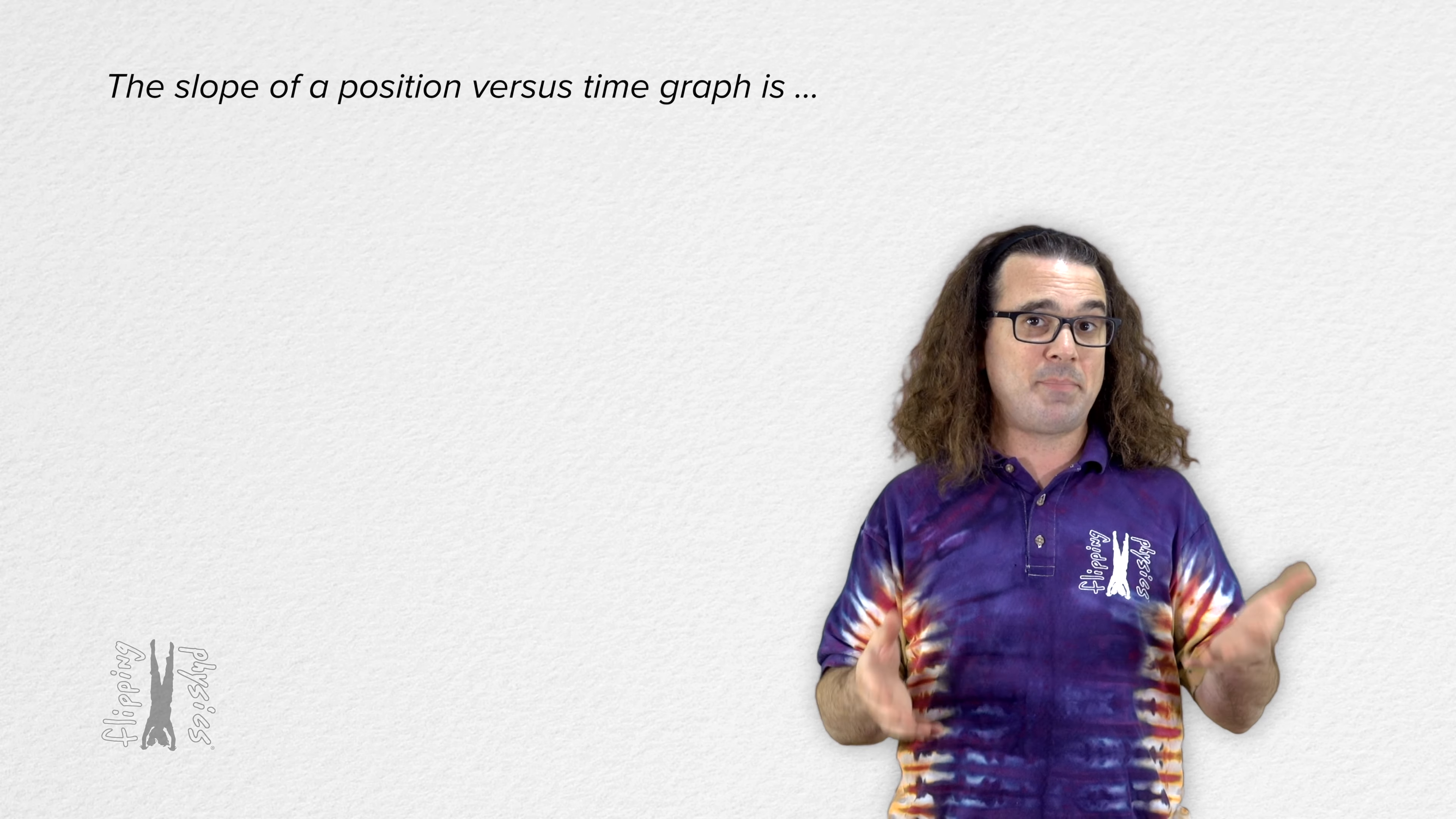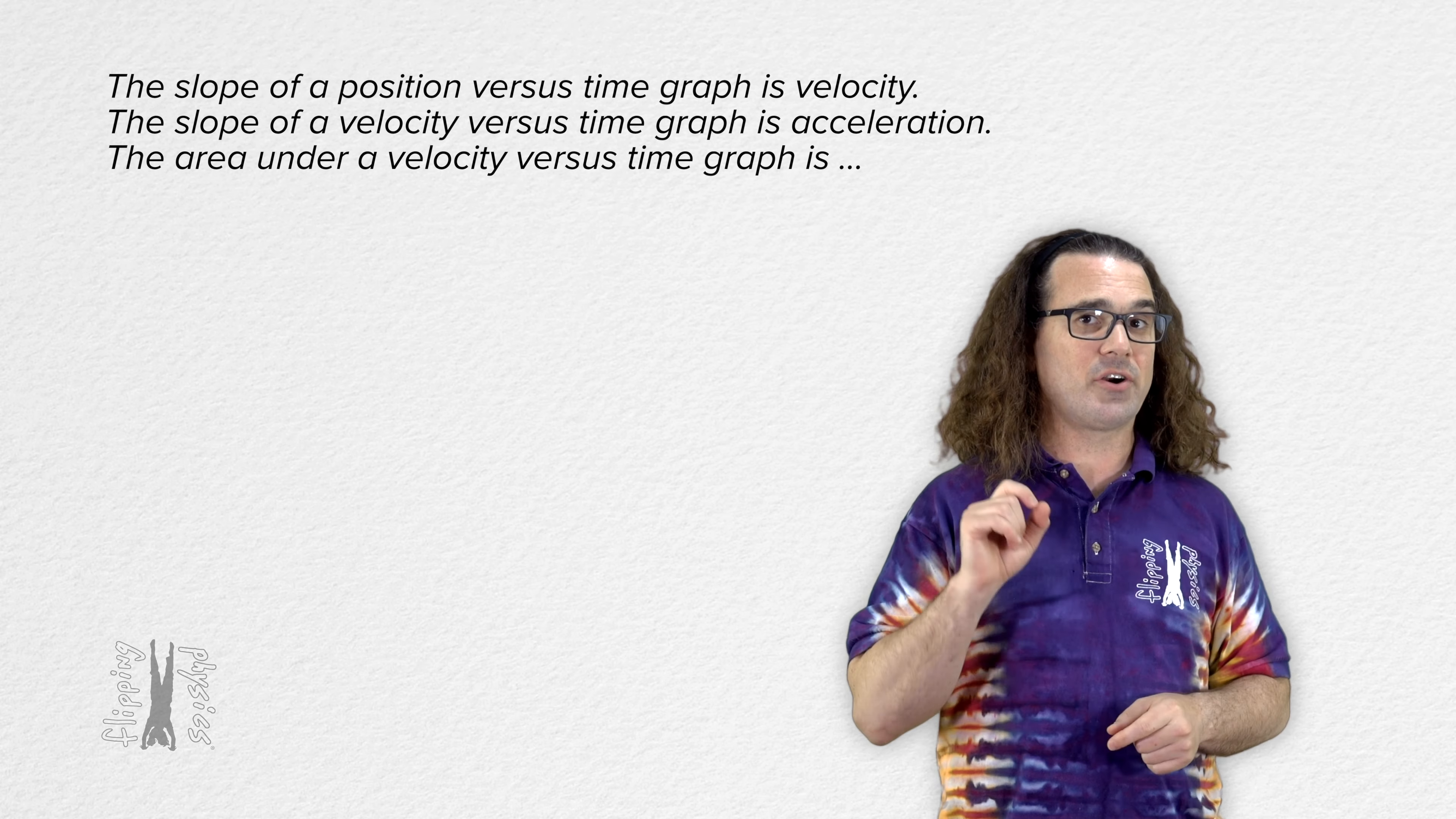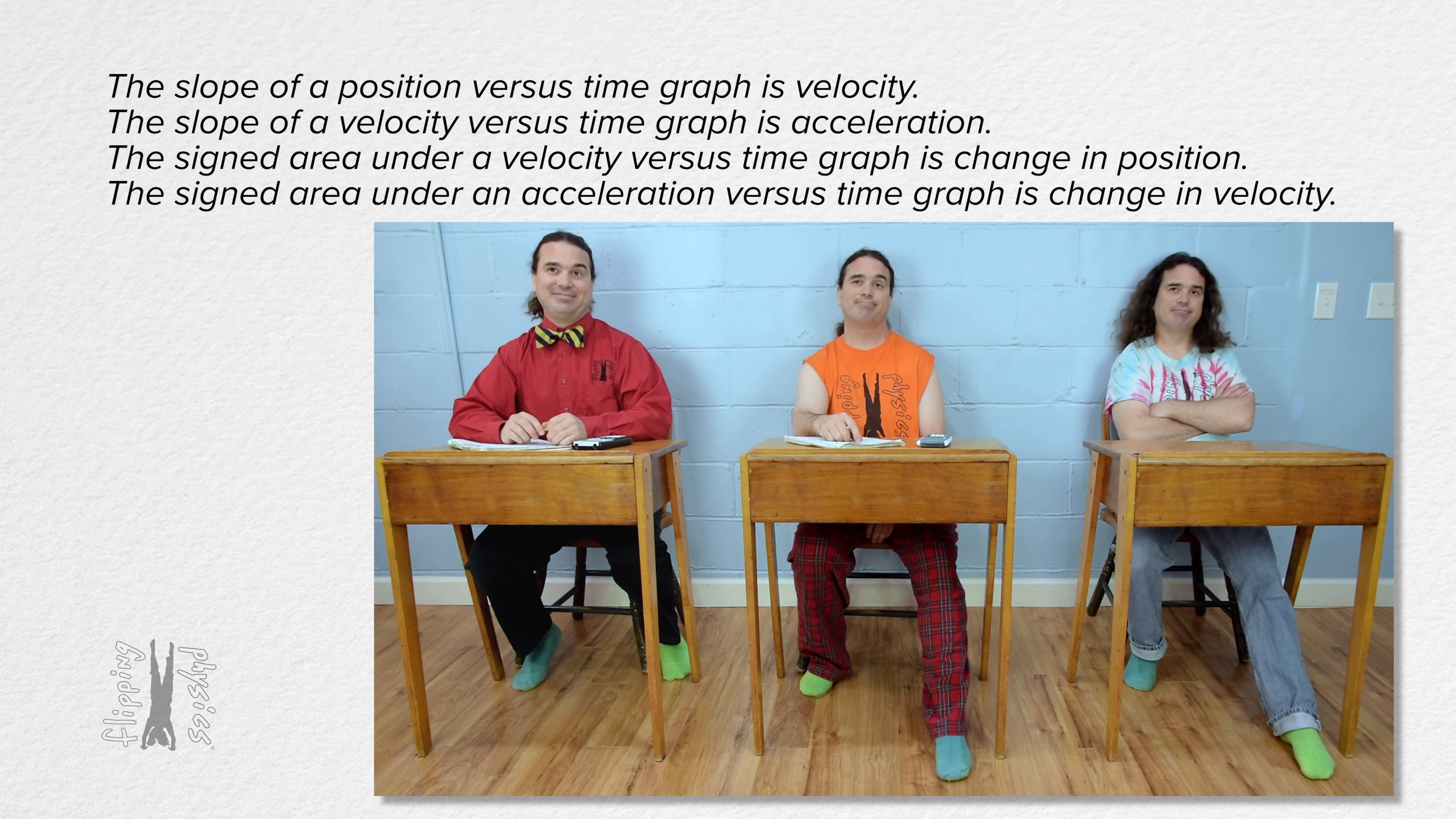These concepts about motion graphs are definitely going to come up on the AP Physics 1 exam. And they will often be combined with other topics in the AP Physics 1 curriculum. So, class, the slope of a position versus time graph is velocity. The slope of a velocity versus time graph is acceleration. The area under a velocity versus time graph is change in position. Well, the signed area. Right. And the signed area under an acceleration versus time graph is change in velocity. Exactly.